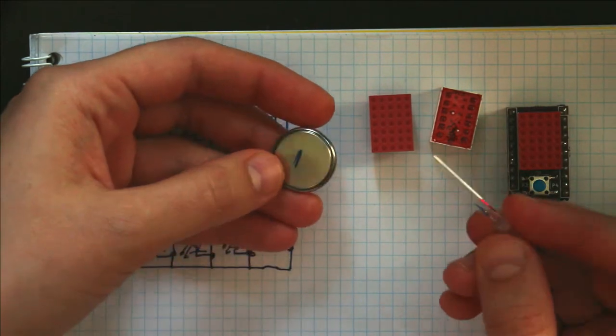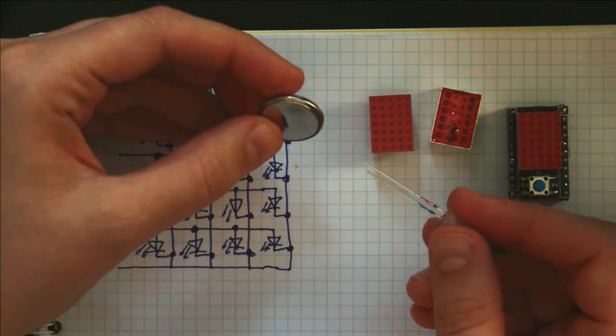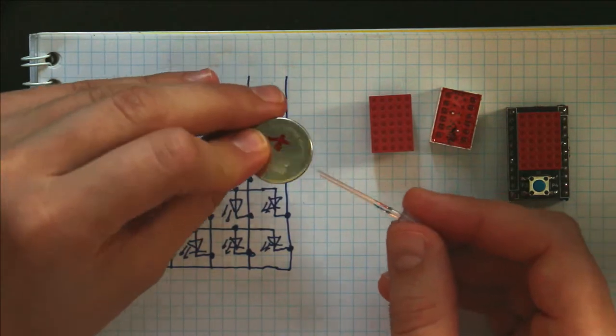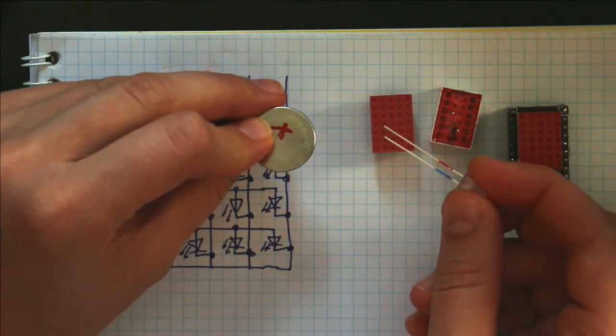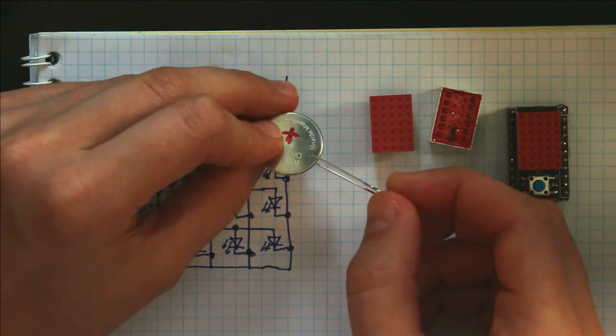And to demonstrate that, I have just a regular LED and a coin cell battery. And I've labeled the negative side and the positive side of the battery and the negative and the positive side of the LED.